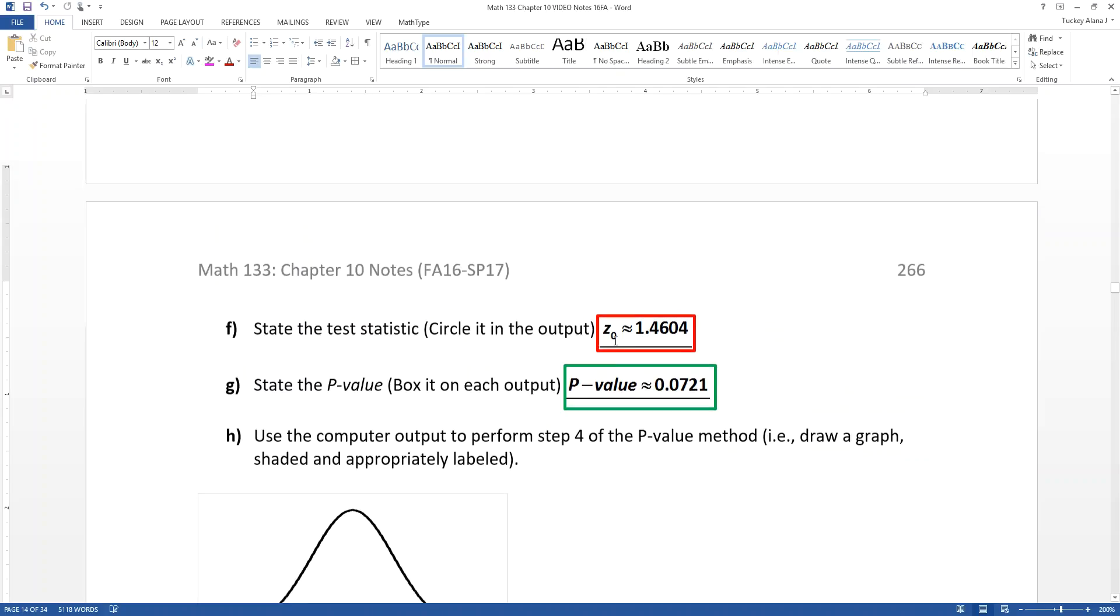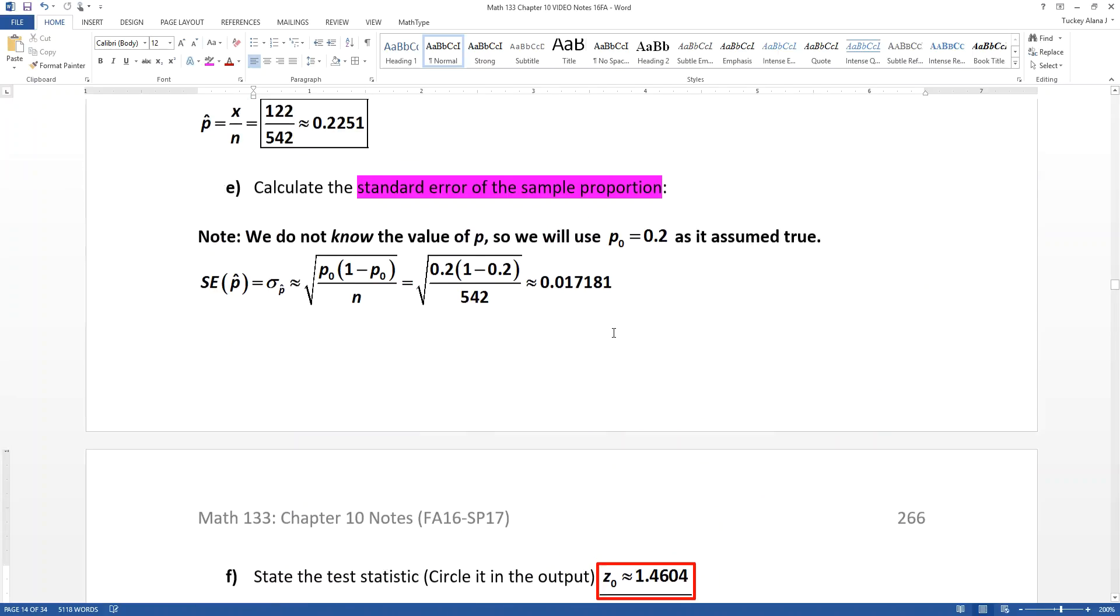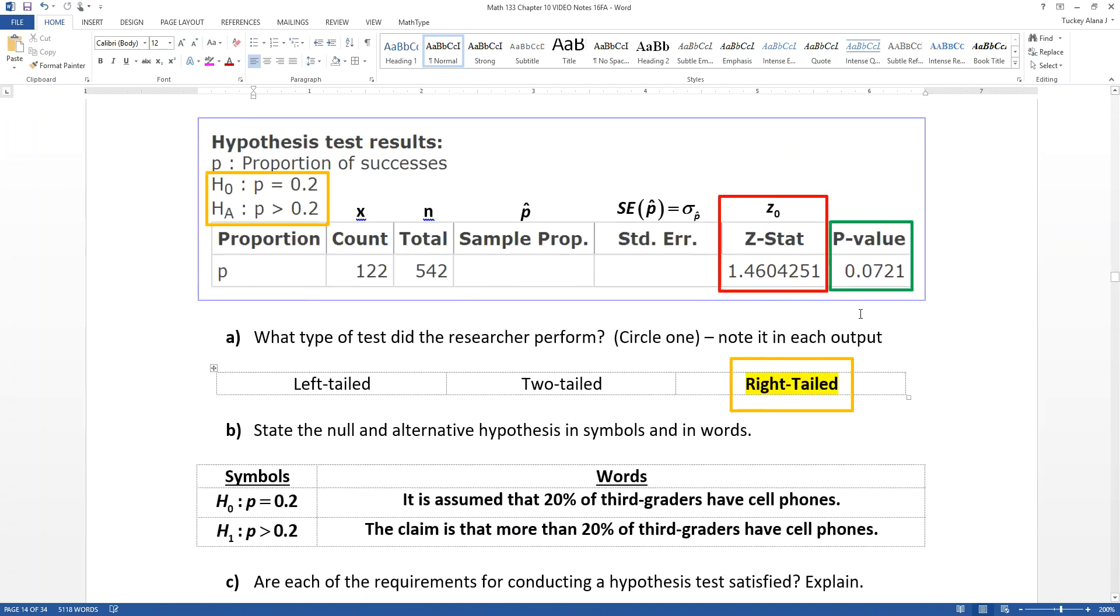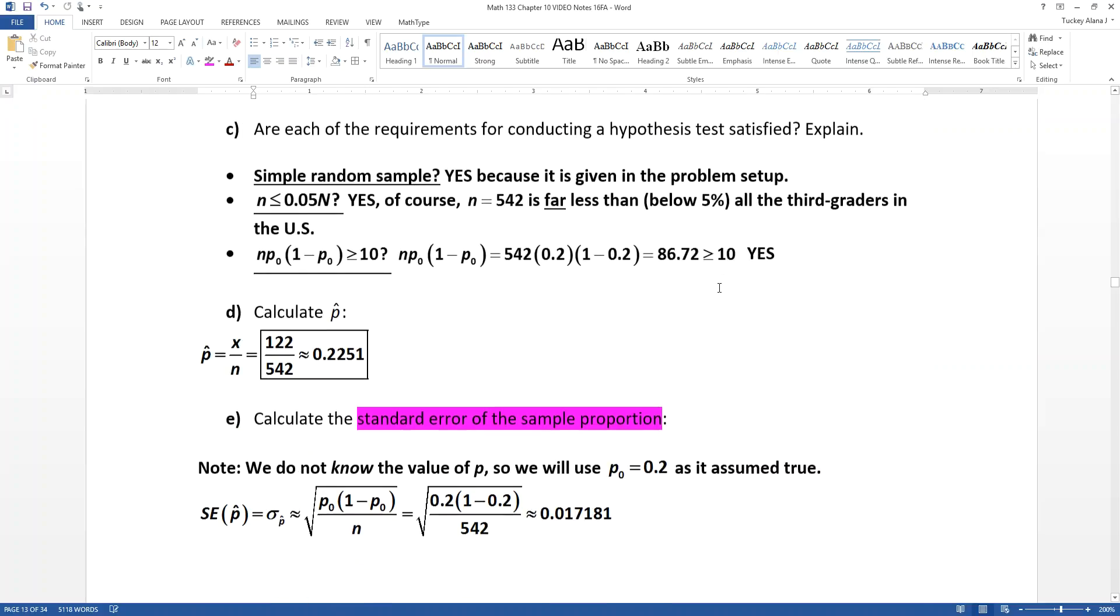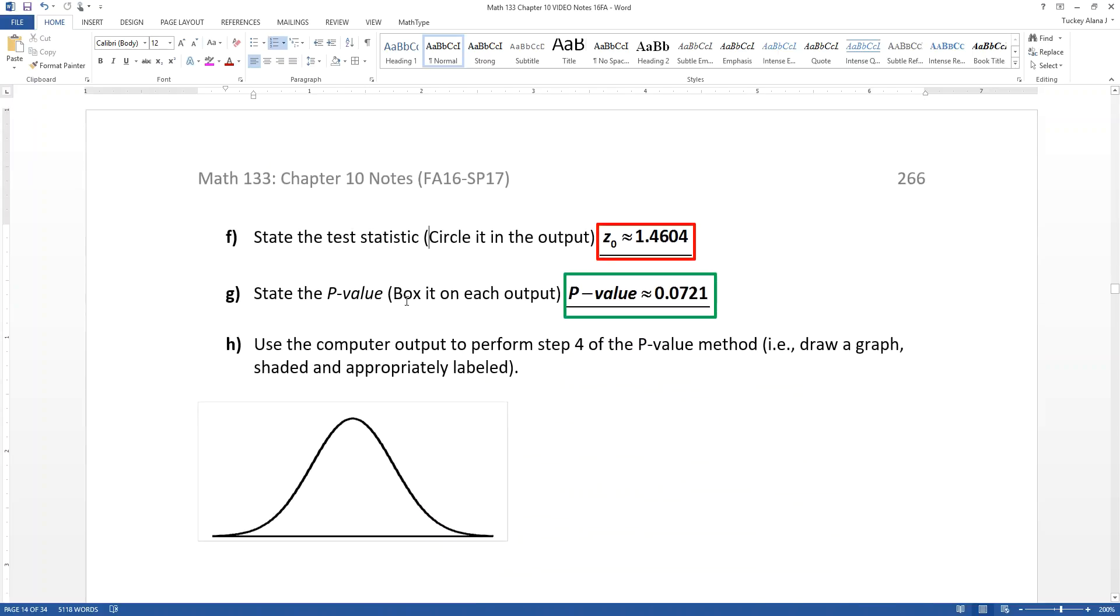So I've boxed that and the P value. I boxed the test statistic in red and the P value in green so you could see them. So that test statistic, 1.46, there it is in red. So that's the part they're looking for right here. And then the P value is that 0.0721.